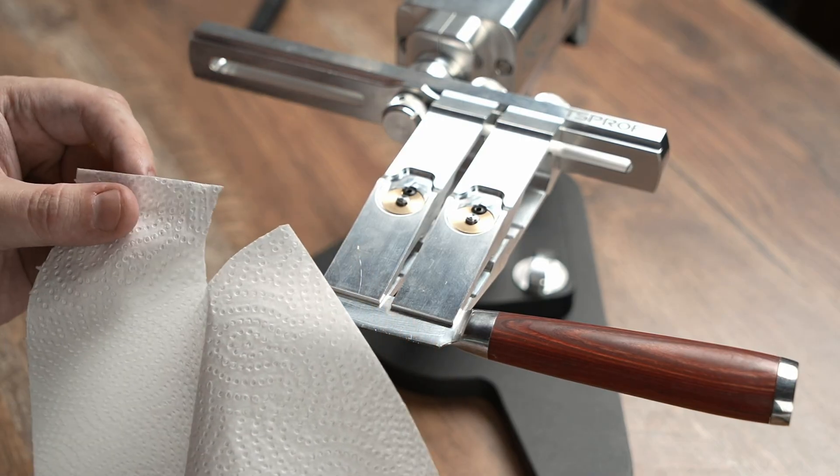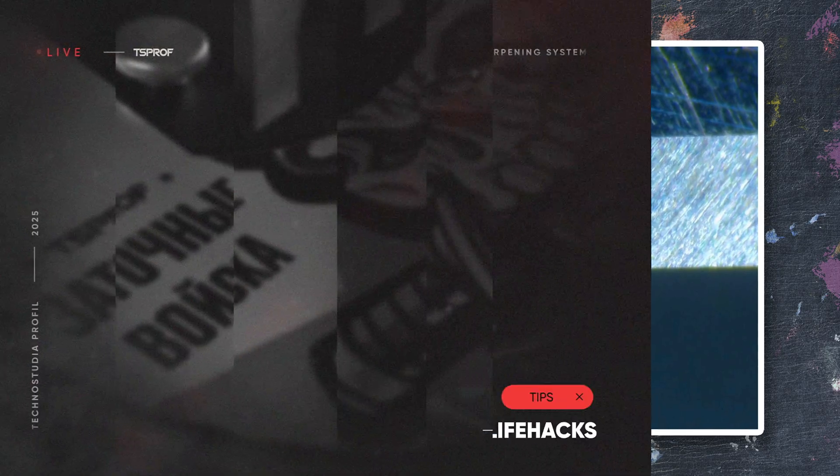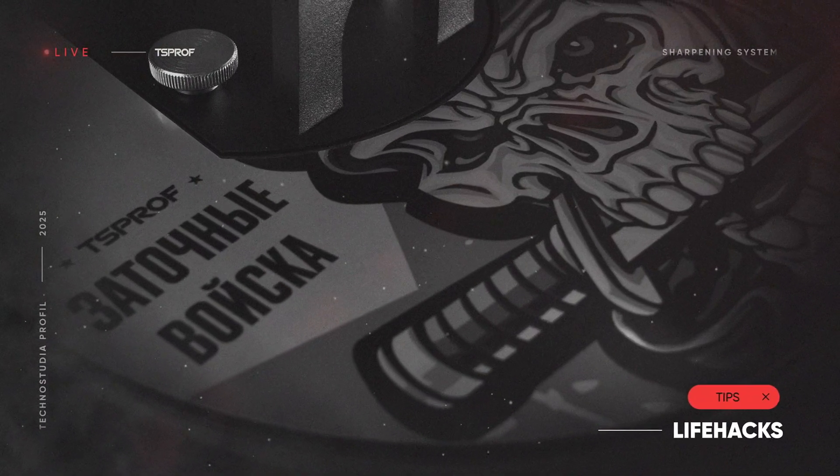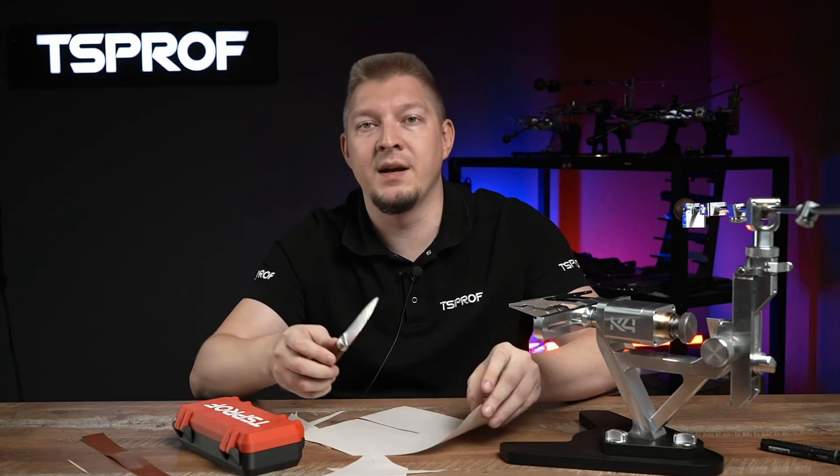Nevertheless the cut is clean, it doesn't snag the napkin or tear. Under the microscope, after sharpening we see an even cutting edge and a uniform scratch pattern from the 75 stone. In fact this is a sufficient finish for most hunting knives, kitchen knives and knives made from inexpensive steel. A nice clean cut.